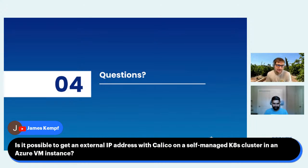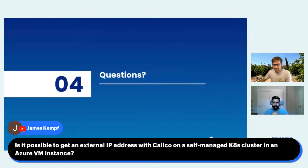The next question from James: is it possible to get an external IP address with Calico on a self-managed Kubernetes cluster in an Azure VM instance? You can get an external IP address. There is a functionality called egress gateway that we use. So yes, with the caveat that I'm not 100% technical on this, yes is my answer at the moment.